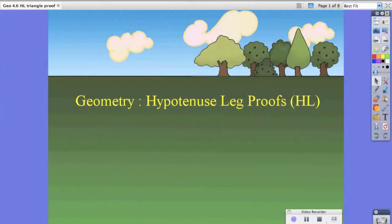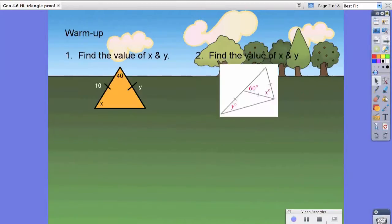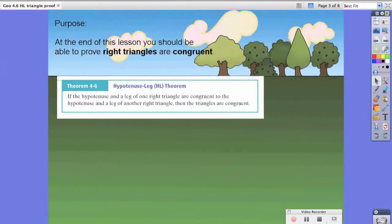Hello students. Today in your geometry class, we're going to work on hypotenuse leg proofs or HL proofs. At the end of this lesson, you should be able to prove that right triangles are congruent.